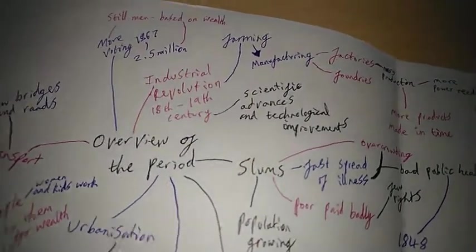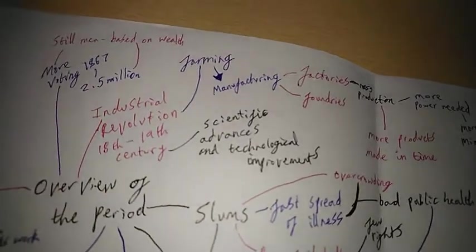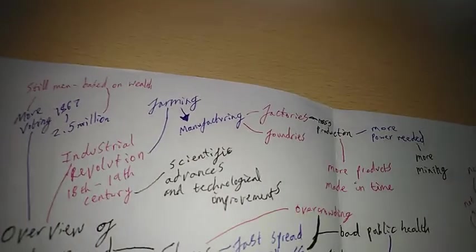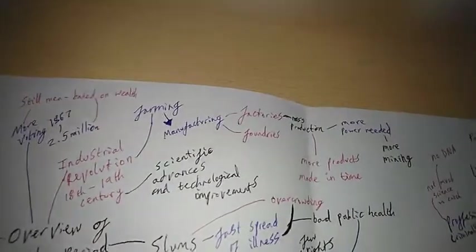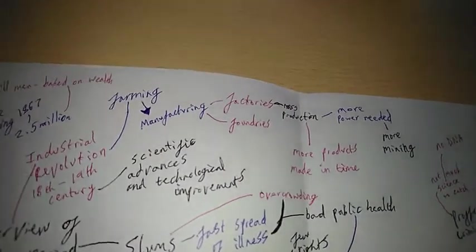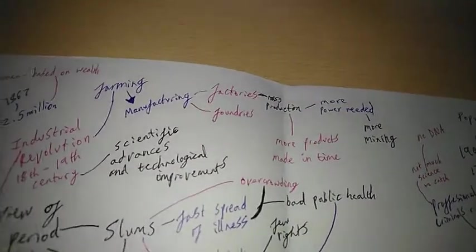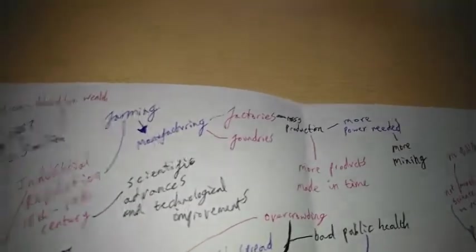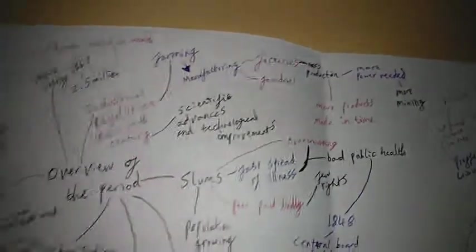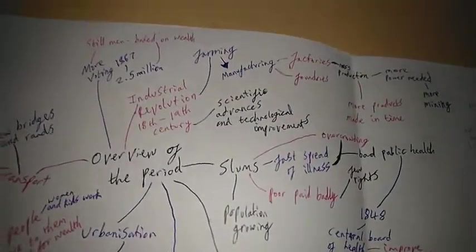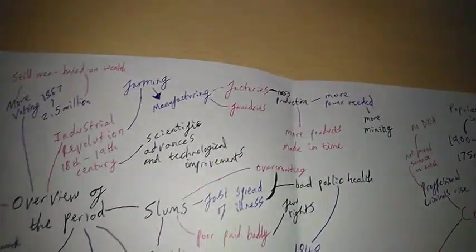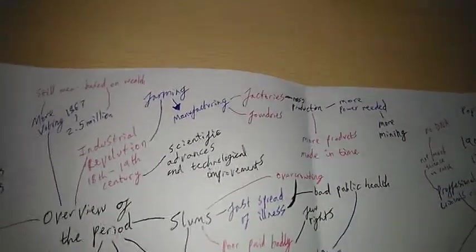Farming changed. Many people used to have jobs in farming and then they got jobs in manufacturing. There were factories and foundries which were produced, which led to mass production of products. More products were made in less time. But more power was needed which led to more mining. People started to move away from farming. As before we saw the peasants all farm the land, now a lot of people are going to be working in the factories.